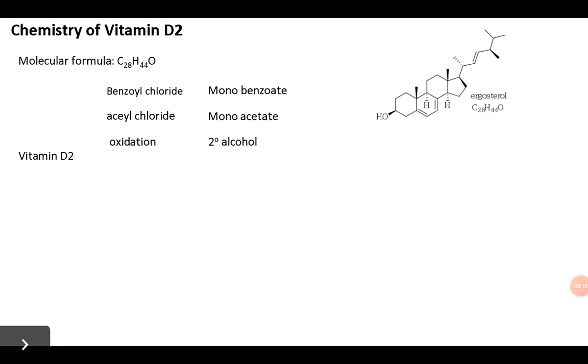Upon hydrogenation, they got critical information regarding structure of vitamin D2. It consumed four moles of hydrogen to give a compound with molecular formula C28H52O. So four double bonds are there, but in ergosterol only three double bonds are present.